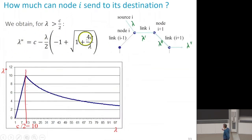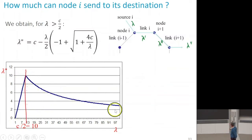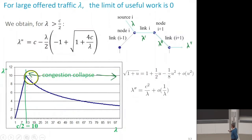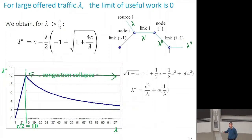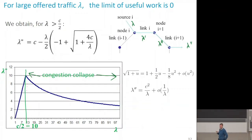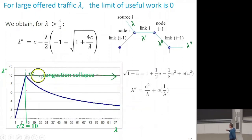Solving the quadratic gives this formula — the output lambda second as a function of lambda. Plotted in the region where lambda is larger than half the capacity, we obtain this curve. Before that point, whatever was given in was going out. But in this region we see exactly congestion collapse: the output is decreasing when the input increases, which is the opposite of what we want. The system does less useful work the more it is offered.